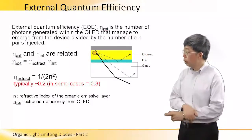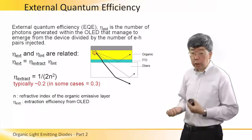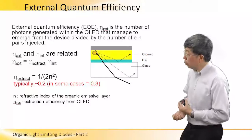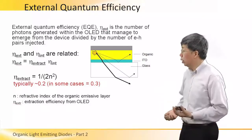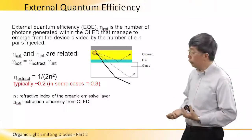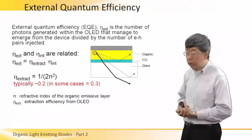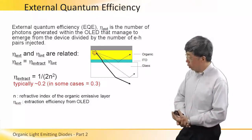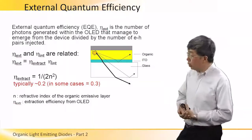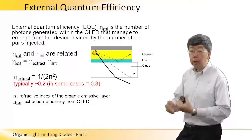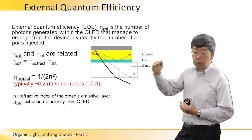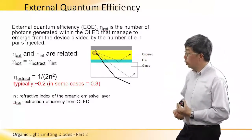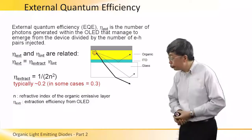Next, we describe the important performance parameter for an OLED: the external quantum efficiency. The external quantum efficiency, or EQE, is defined as the number of photons which were generated within the OLED that can actually escape or emerge from the device, divided by the number of electron-hole pairs injected. In other words, it is simply a ratio — the number of photons that can escape from the device per electron-hole pair injected.